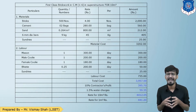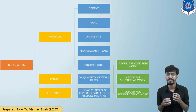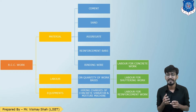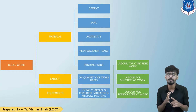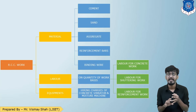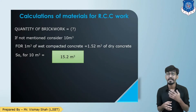Now let us see the rate analysis for RCC work in beam and column for ratio 1:1.5:3. I have divided the entire rate analysis into 3 parts: material, labor, and equipment. Equipment consists of hiring charges for a machine mixer and needle vibrator. Material consists of 5 elements: cement, sand, aggregate, reinforcement, and binding wire. The labor component consists of 3 kinds: labor for centering and shuttering, labor for steel work, and labor for concrete work.